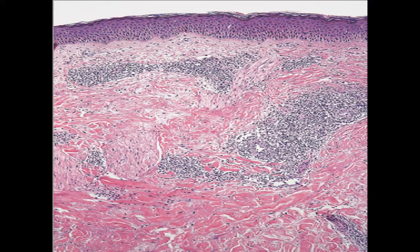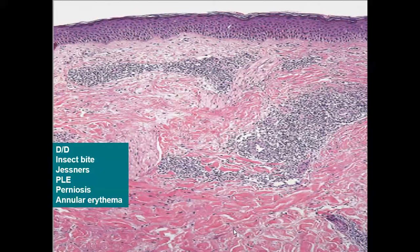This image shows sleeve-like perivascular lymphohistiocytic infiltrate. With a normal epidermis, no basal cell vacuolar degeneration, no granulomas, and no other cells, the only finding is superficial and deep perivascular lymphocytic infiltrate. Differential diagnoses include insect bite reaction (usually associated with eosinophils), Jessner's lymphocytic infiltrate, polymorphic light eruption, perniosis, and various annular erythemas.